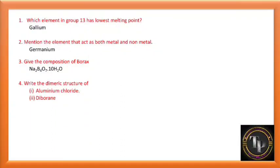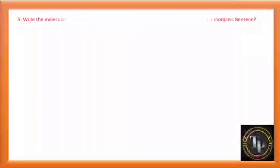Write the dimeric structures of aluminium chloride and diborane. These structures are very important — they may ask for diborane or aluminium chloride. Please refer to and draw these structures from the NCERT textbook.